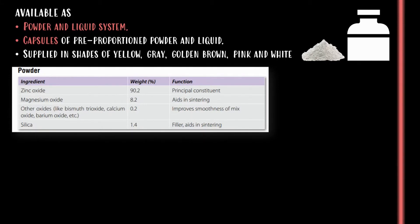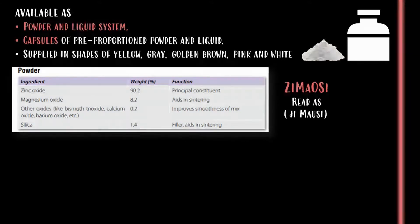It is supplied in shades of yellow, grey, golden brown, pink, and white. The composition of the powder can be remembered with the mnemonic ZMOSI, where ZI represents zinc oxide and MA refers to magnesium oxide.